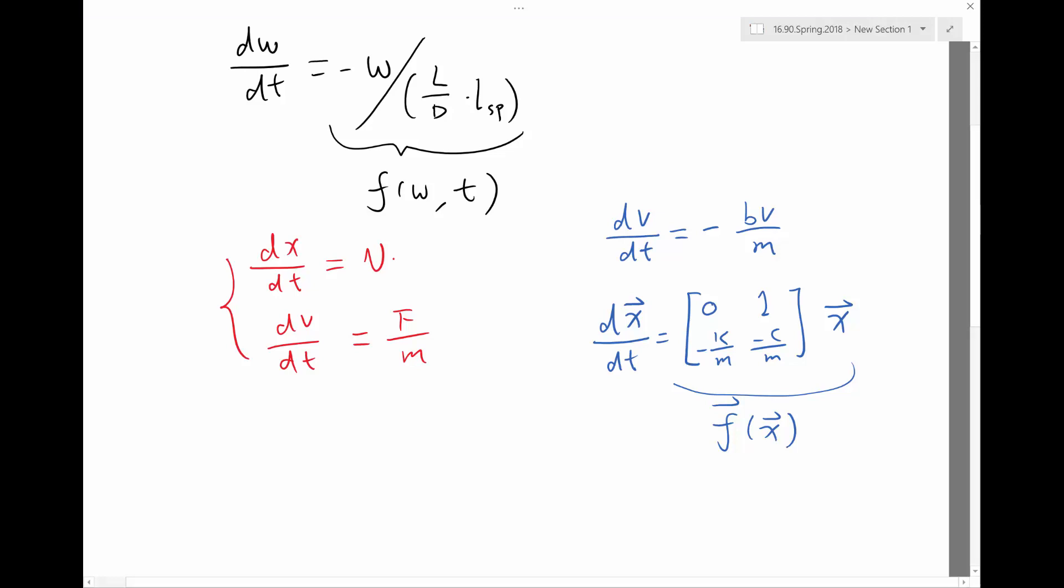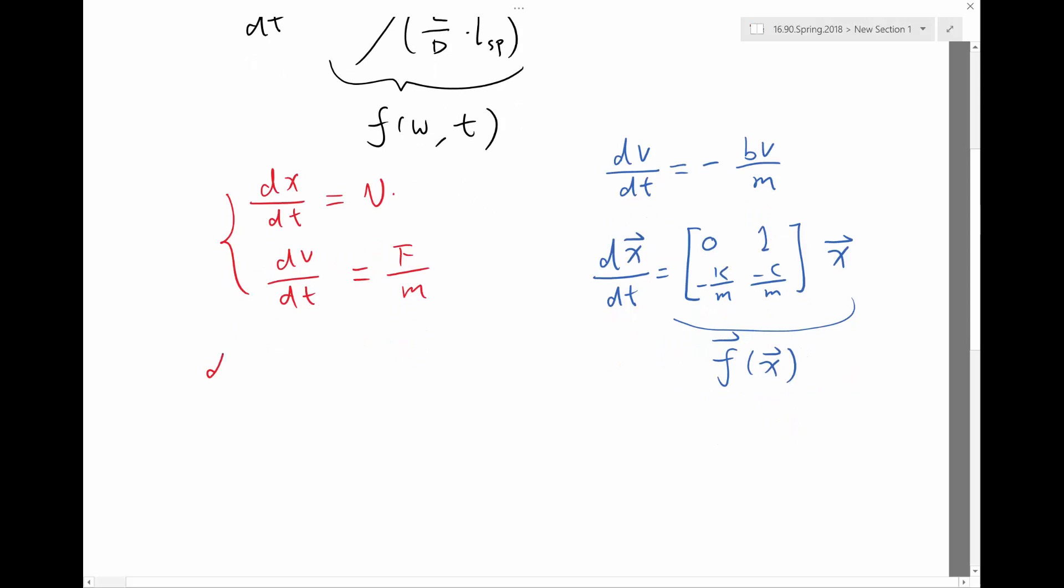And this right-hand side is a function F, now being also a vector of the same dimension as a vector function of X. And by the way, in the previous example, you can also write this as d/dt of a vector, which is X and V, right? Being V and F over M. That's another way to write this second-order ODE as a vector first-order ODE. And you can always do that.